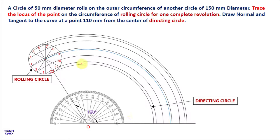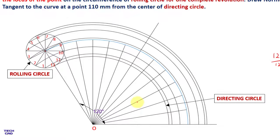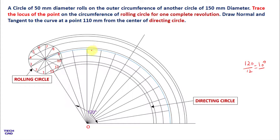Take the protractor and divide the 120-degree angle into 12 equal parts. Remember: however many parts you divide the rolling circle into, you divide the directing circle arc into exactly the same number of parts. So 120 degrees divided by 12 gives 10 degrees apart. From 10 degrees, make a line; then 20 degrees, then 30 degrees, and so on at 10-degree intervals. Your lines must reach up to the center arc of the rolling circle. Label these points C1 to C12.